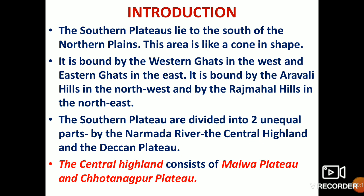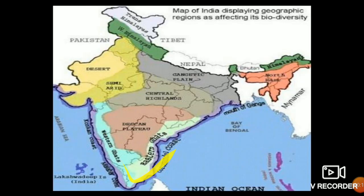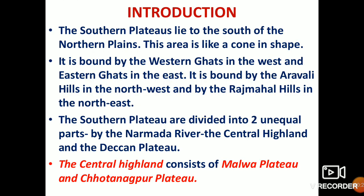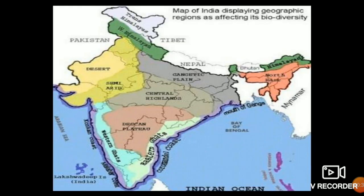The Southern Plateau lies to the south of the Northern Plains. This area is like a cone in shape. It is bound by the Western Ghats in the west and Eastern Ghats in the east.